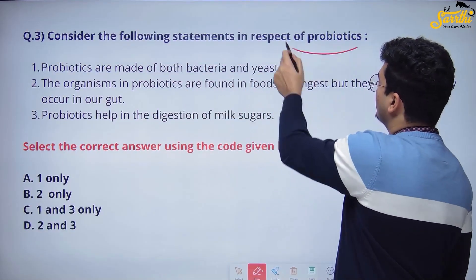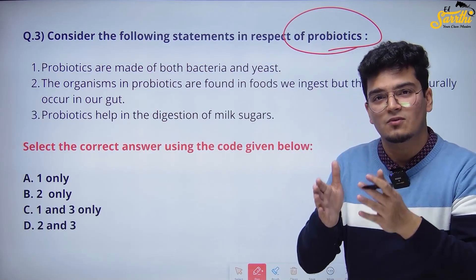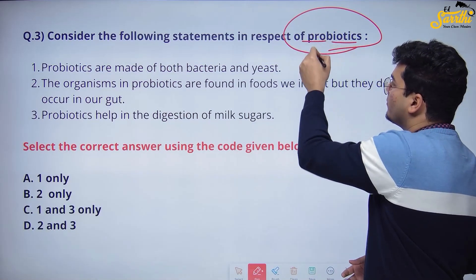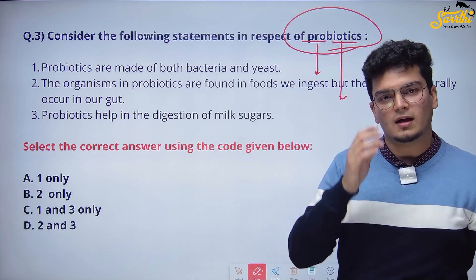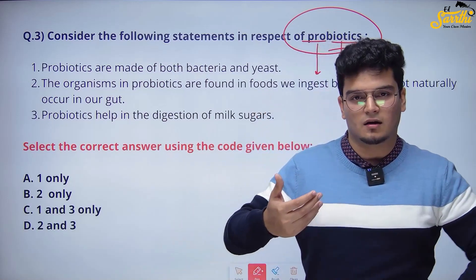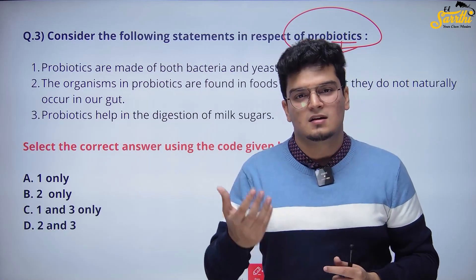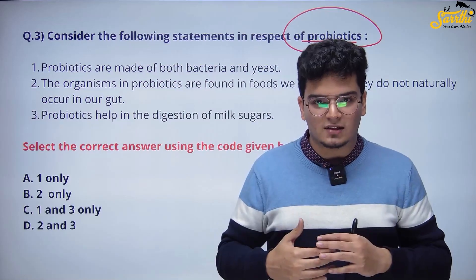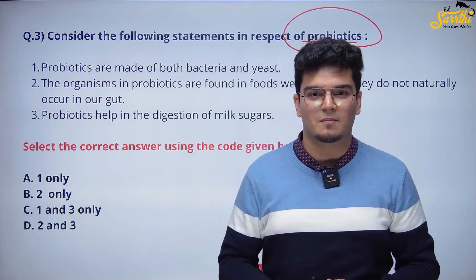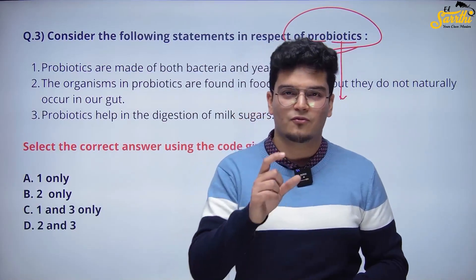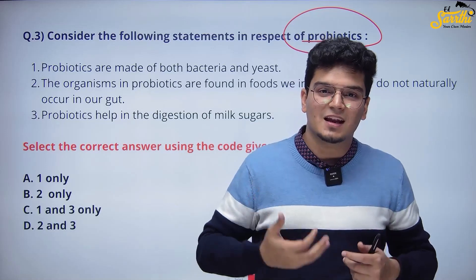Consider the following statements in respect of probiotics. Word breakdown is very important in science and tech — you need to break down words and see their meanings. Probiotics: 'pro' meaning in favor, 'biotics' meaning bacteria. These are basically drinks we take that augment our gut bacteria. In our gastrointestinal system, some bacteria are already present that help us digest food. When their level falls, we can externally take this bacteria. One of these is lactobacillus — the bacteria present in curd. If you've heard of a drink called Yakult, it is a pure probiotic drink augmenting the level of bacteria in your gut.